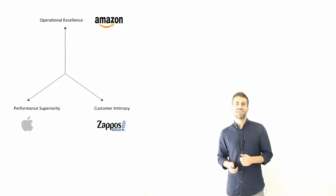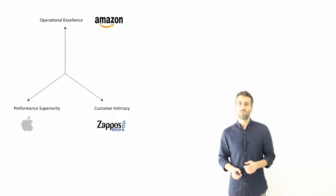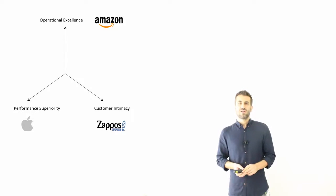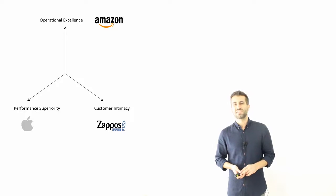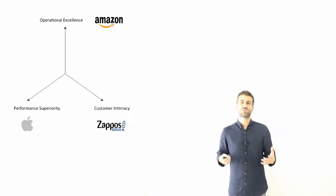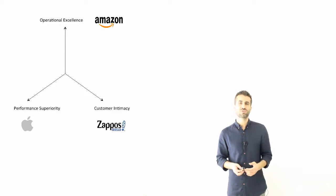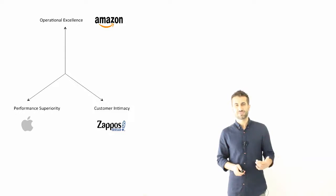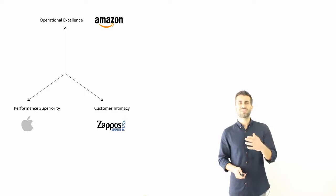Amazon is one of the best companies in terms of operational excellence — they have huge infrastructure investments. Zappos is a good example of customer intimacy; they were the first online company selling shoes and define themselves as a service company that just happens to sell shoes, providing superior customer service. They were also eventually acquired by Amazon. Apple is superior in terms of performance and innovation. You can argue these companies are also strong in other dimensions as well, but these are where they excel most.